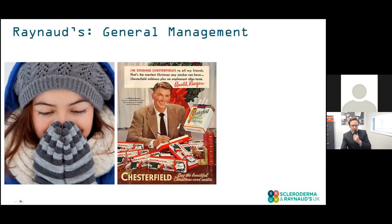It's absolutely critical that people with Raynaud's symptoms avoid cigarettes. Cigarettes contain nicotine and many other chemicals that encourage blood vessels to constrict, aggravating Raynaud's symptoms. People with systemic sclerosis are far more likely to develop digital ulcers if they are current smokers. Cigarettes also cause atherosclerosis — hardening of the arteries — which reduces blood supply to the fingers and toes in the long term. So there's never a good reason to smoke, and it's doubly important to stop if you have Raynaud's. A healthy diet and maintaining a healthy weight are also important to avoid arterial hardening.